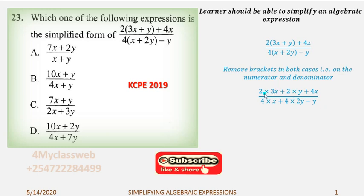This part will give me 6x, this part will give me 2y, this part will give me 4x, the other part will give me 8y. And therefore, I will have 6x plus 2y plus 4x. The denominator part, I will have 4x plus 8y minus y.